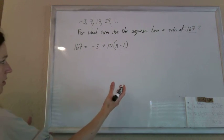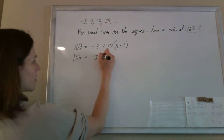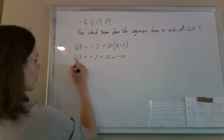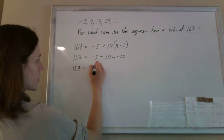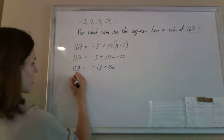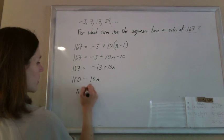So now you just solve this. So 167 should be negative 3 plus 10n minus 10. So 167 equals negative 13 plus 10n. Add 13, 180 equals 10n. So n should be 18.